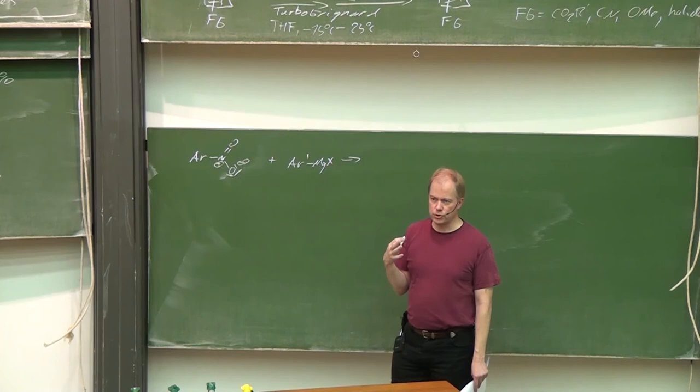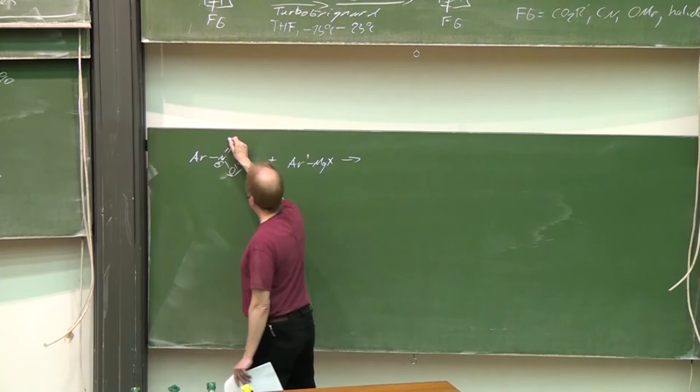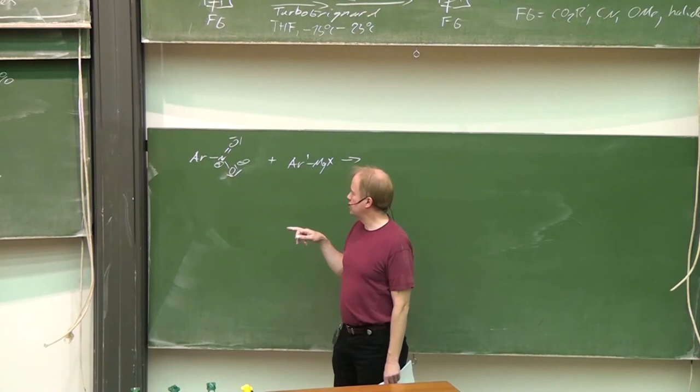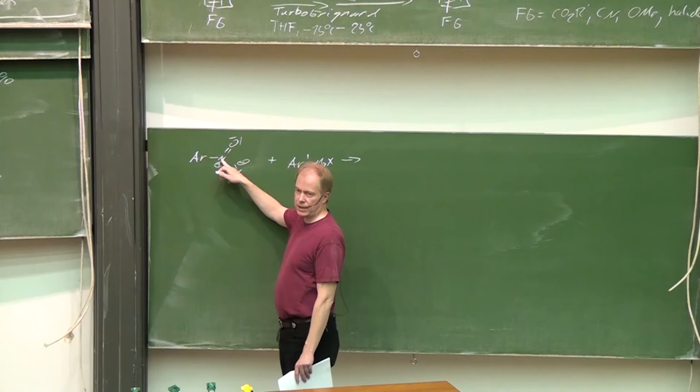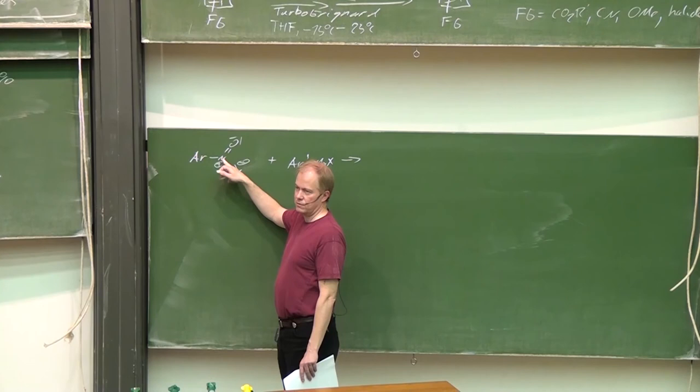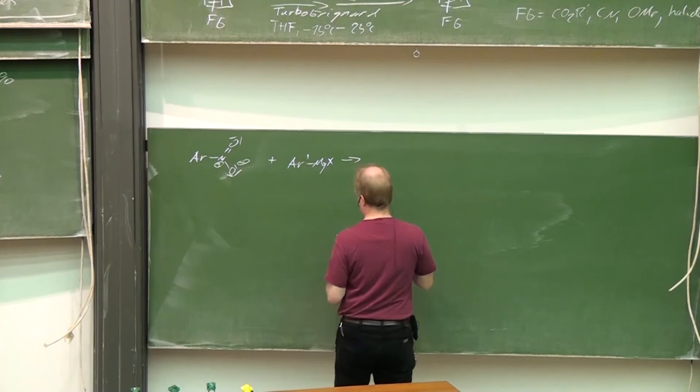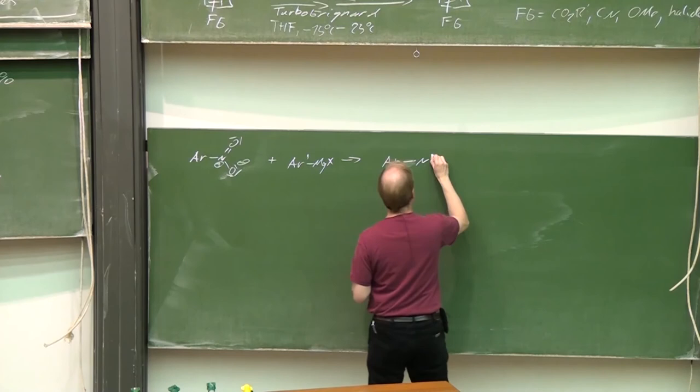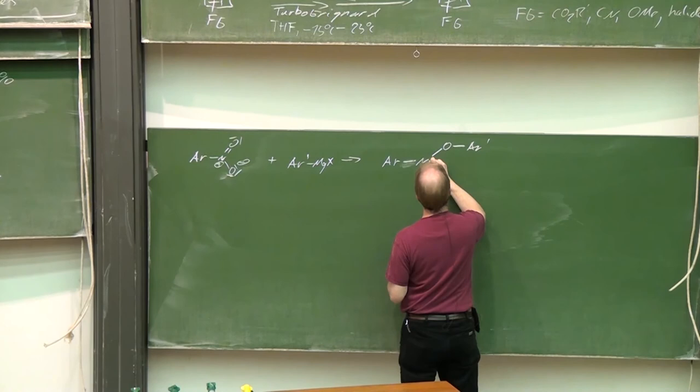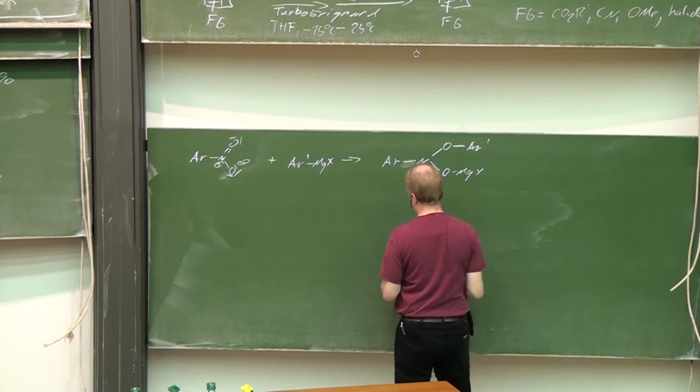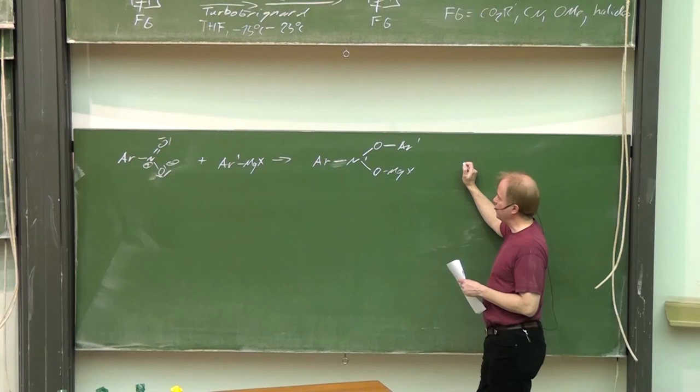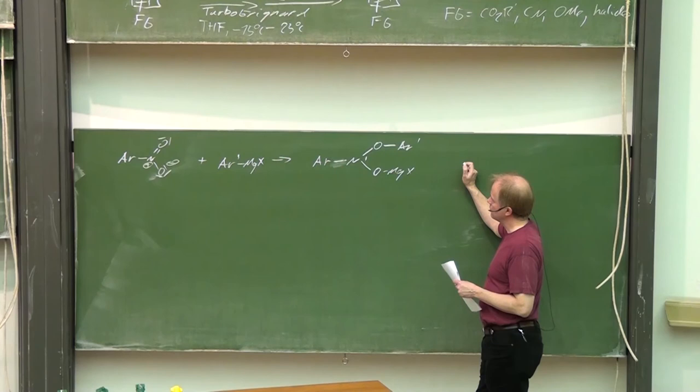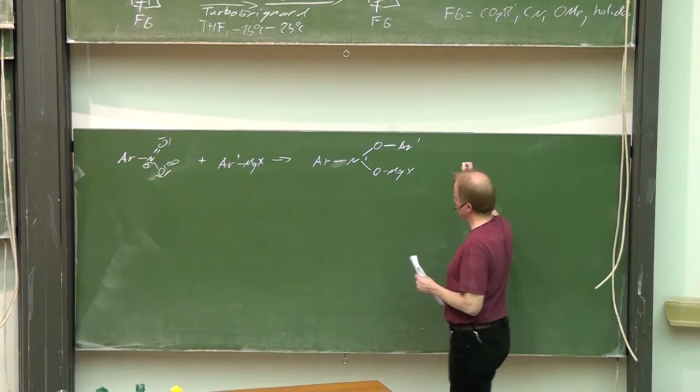In analogy to the 1,2-addition process of Grignard reagents to a carbonyl group, at first glimpse we would tend to make the addition reaction nucleophile attacking here at nitrogen. This is not true. The aryl group attacks the oxygen. Let's see what happens. Makes sense. Then an elimination reaction takes place.